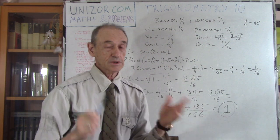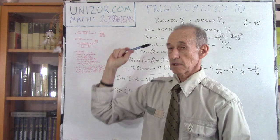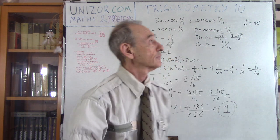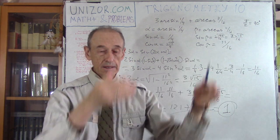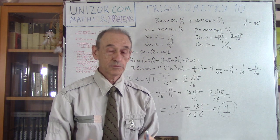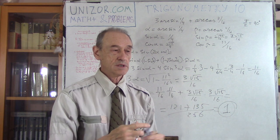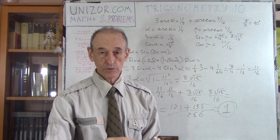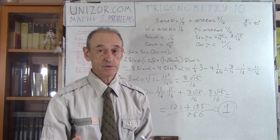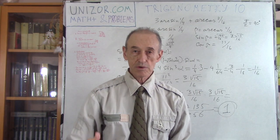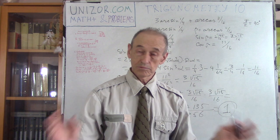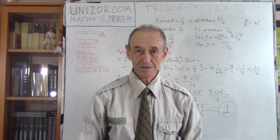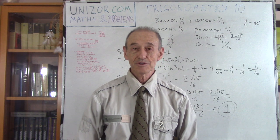Go to unizor.com, choose the course Math Plus and Problems, choose the trigonometry section, and go to trigonometry number 10. You will have the lecture you just saw and a textual description with the problem and solution. I suggest you do the problems yourself without reading the solution — that would be a very good exercise. Brain training is the purpose of solving problems. That's it for today. Thank you very much and good luck.